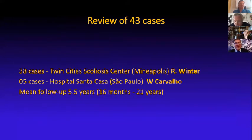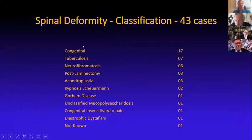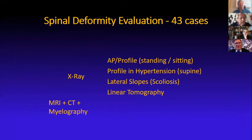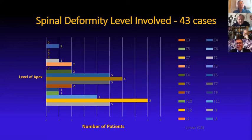I went through a review of 43-44 cases from well-known centers in Brazil and the United States. The majority of these patients with neurological deficit were under 20 years. Most of the cases were congenital, but there are many other causes. Eight cases had minor neurological deficit, 27 had severe paraparesis, and 28 had paraplegia with no movement below the compression.